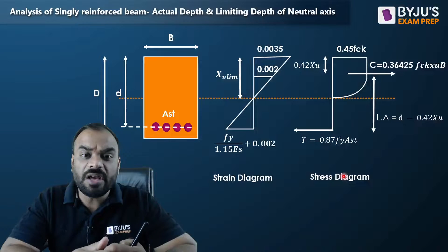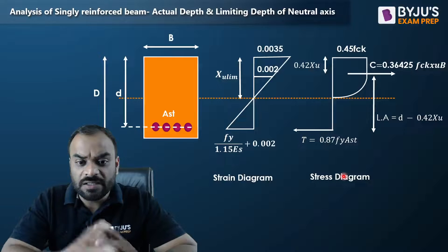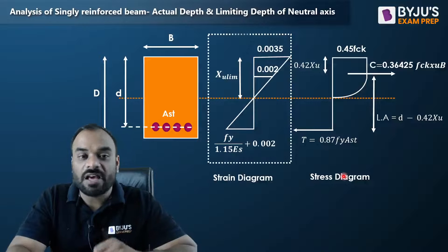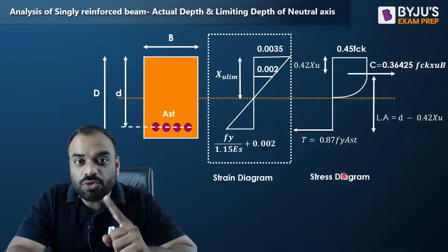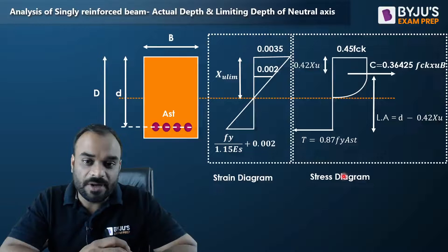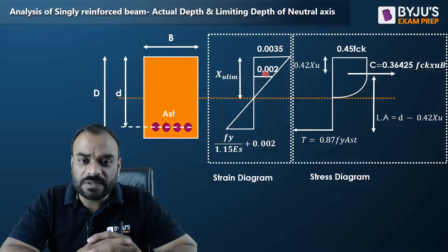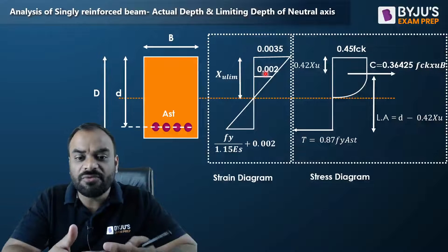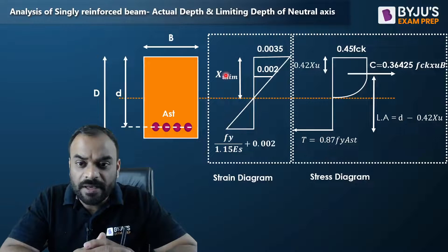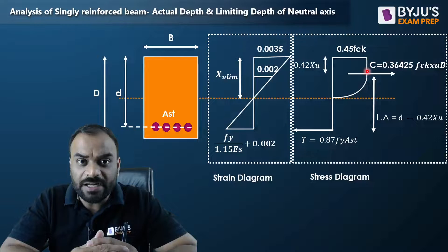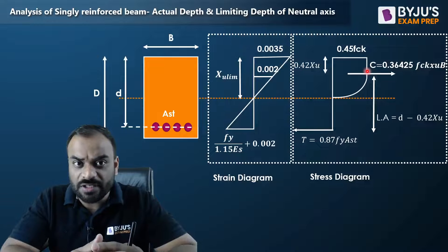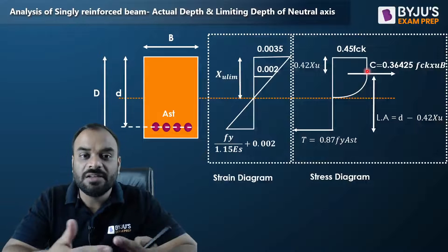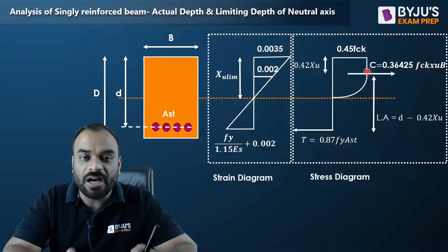If we want to find out the limiting depth of neutral axis, we need to use the strain diagram. If we want to find out the actual depth of neutral axis, we need to use the stress diagram. For the limiting depth we'll use the concept of similar triangles, and for the actual depth we'll use the concept of force balancing — equating the total compressive force with the total tensile force.